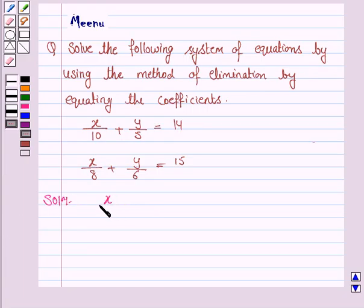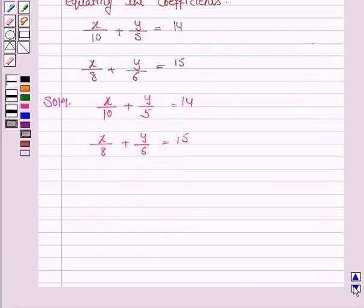The given system of equations is x by 10 plus y by 5 is equal to 14, and x upon 8 plus y upon 6 is equal to 15. We will first simplify these equations.